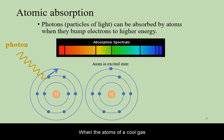When the atoms of a cool gas are in our field of view of some light source, then the electrons of those atoms can absorb some of that light.